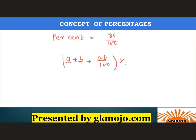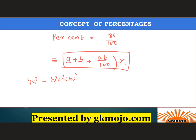Suppose there is a number n. It is increased by a percent, then it is increased by b percent later on. So the effective percentage change will be equal to a plus b plus ab upon 100. Now you must have seen an ad in the newspaper or on TV that there is a 50 plus 10 percentage discount.